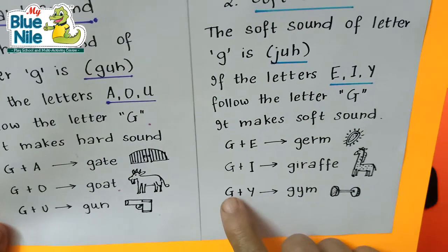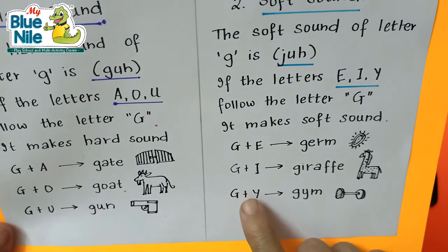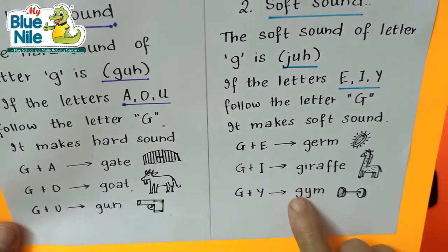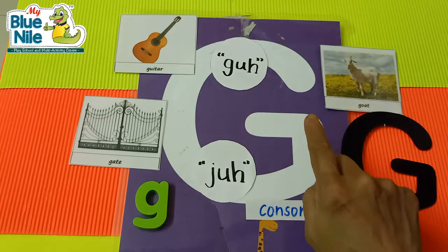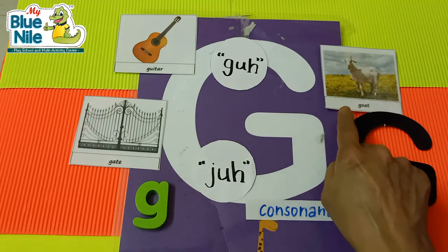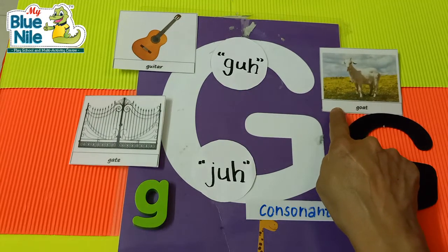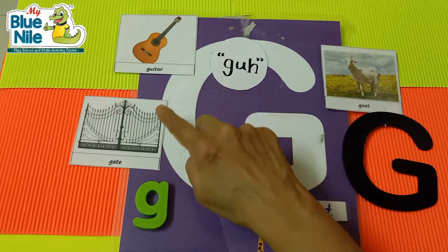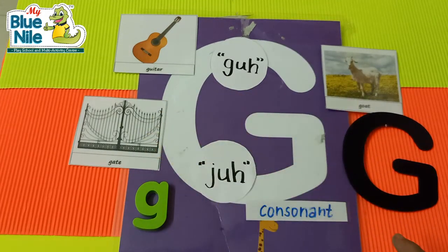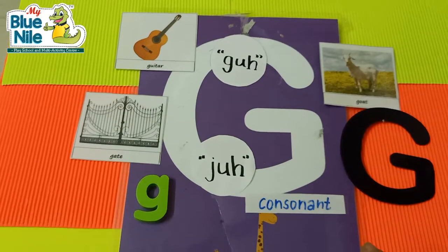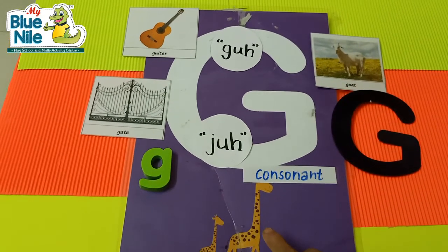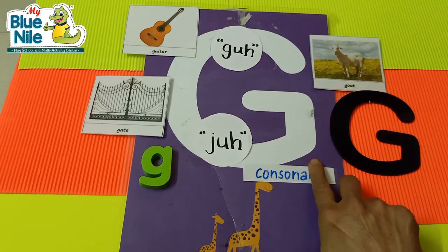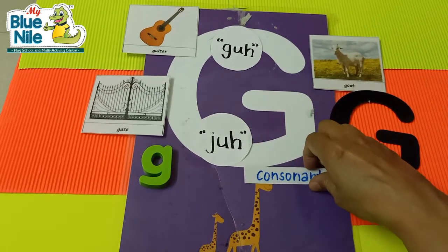So here we have the hard sound of G: goat, guitar, gate. And the soft sound of G, which is J: giraffe.